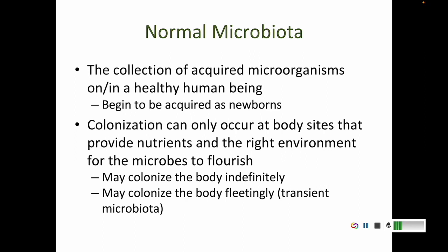Colonization of microbes only occurs at body sites that provide the right nutrients and the right environment for them to flourish. Different parts of your body have different temperatures, moisture content, and access to oxygen, and different chemicals and nutrients available. So your armpit is going to be different from your eyeball, which is different from inside your intestines — you'll have different types of microbes colonizing different parts of your body. When microbes colonize your body, they might be there indefinitely — for the rest of your life — or they might just be there fleetingly. For example, if you're playing tackle football and someone touches you, a little bit of their microbes get onto your skin, but your body doesn't provide for them to stay — so they're just there for a couple of weeks or months. That's your transient microbiome.